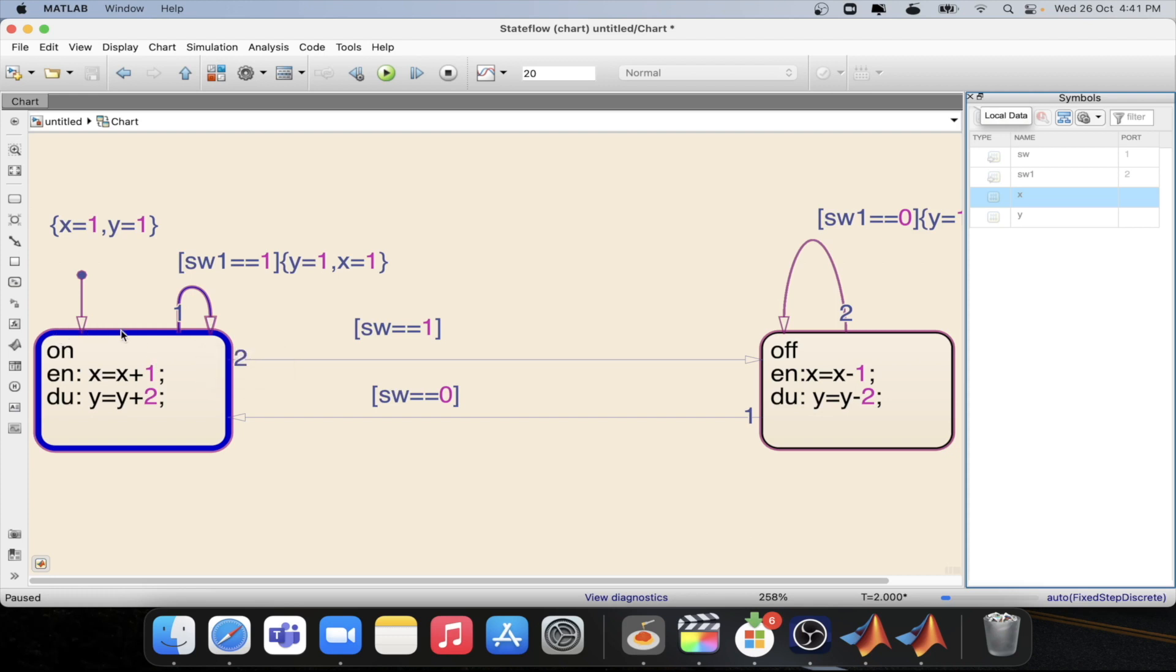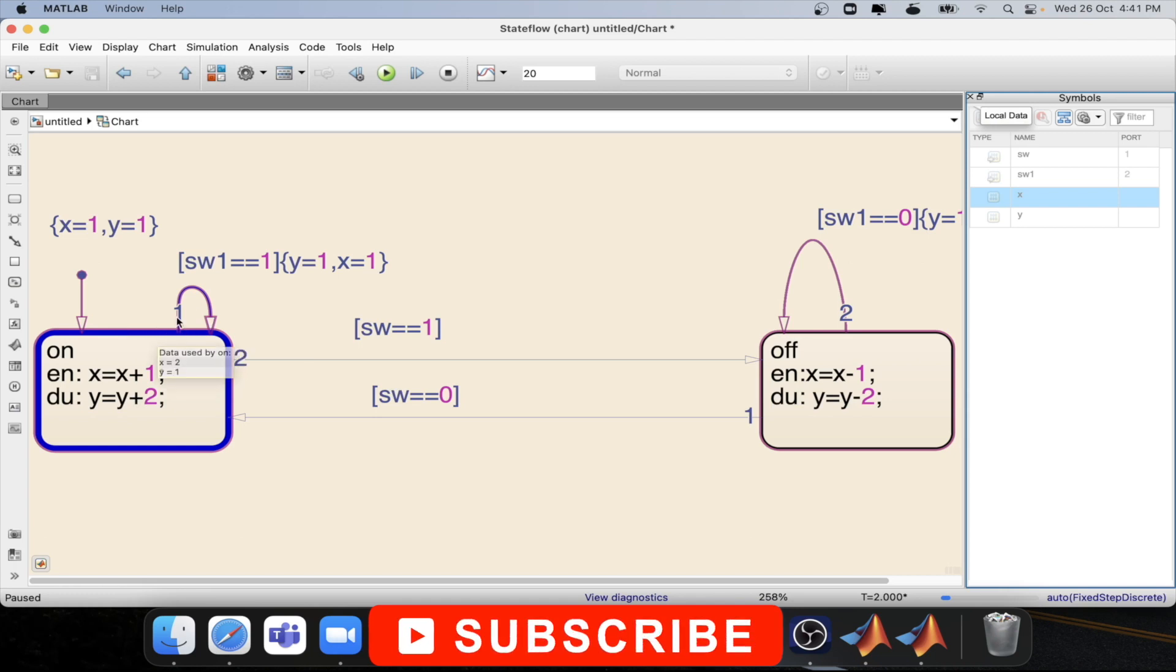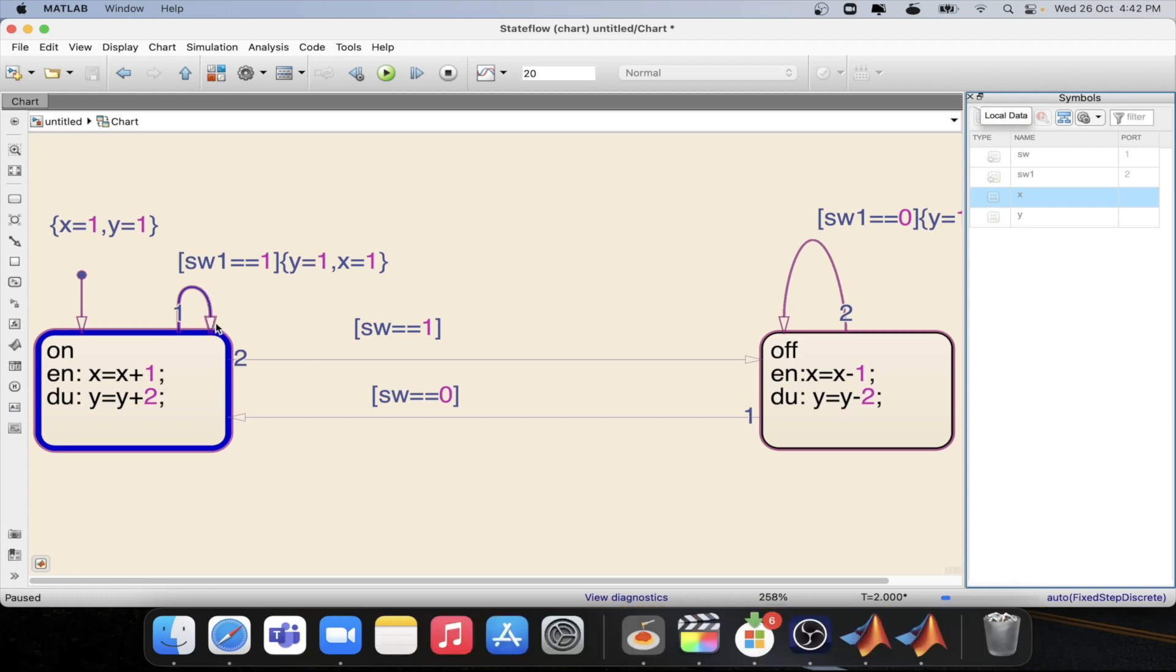But it is able to reset y. Because while entry only the operation will happen. But during something needs to happen when the state is active continuously. So that is why it is able to reset the y value. But not the x value. Because it is going out and then coming in while coming in is doing the reset operation. So while leaving this it has set the value of x equal to 1. Then again entering it has executed the entry operation, which is x equal to x plus 1. That is why it is 2.